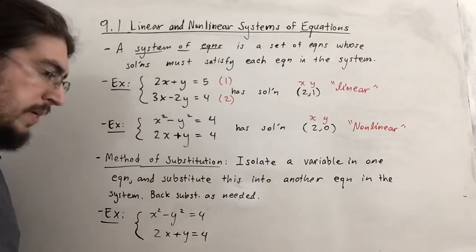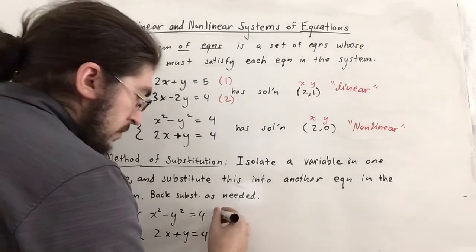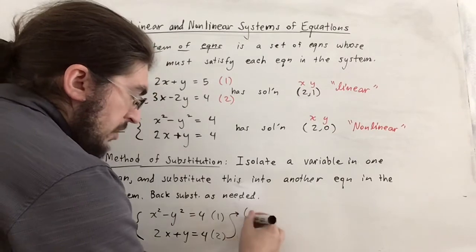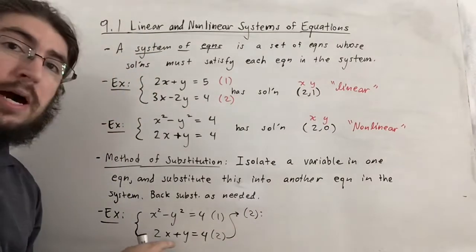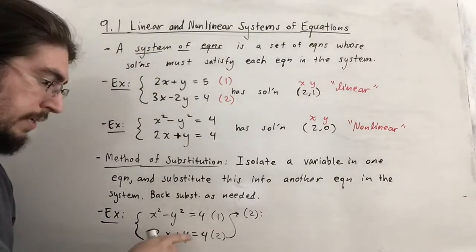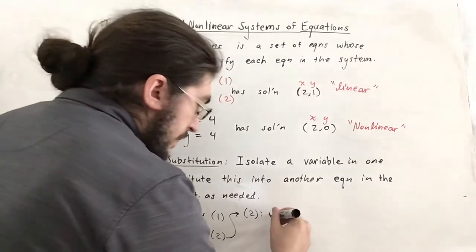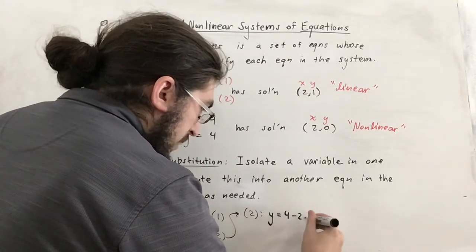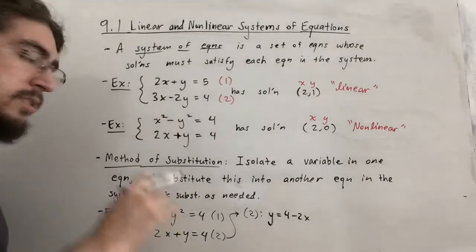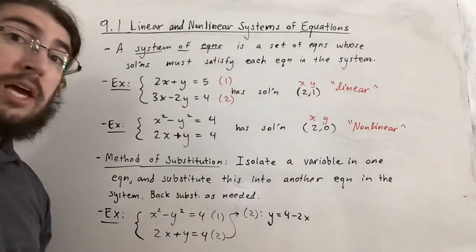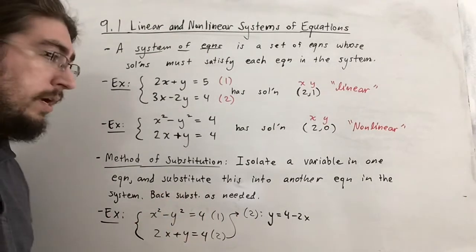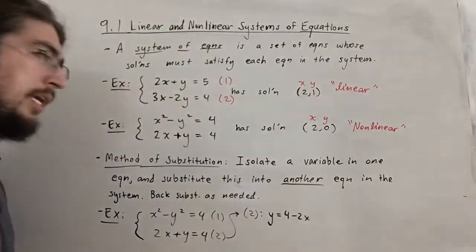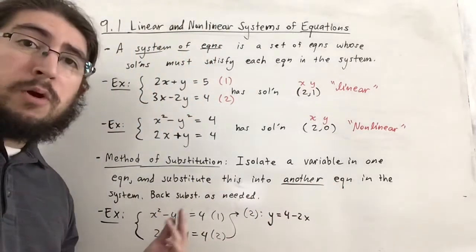I'm going to focus on equation 2. In equation 2, we can isolate y by just subtracting 2x to the other side, so we get y is equal to 4 minus 2x. Now I'm going to substitute this into the other equation, which is equation 1. Note that substituting back into the same equation is pointless — you'll get 0 equals 0.